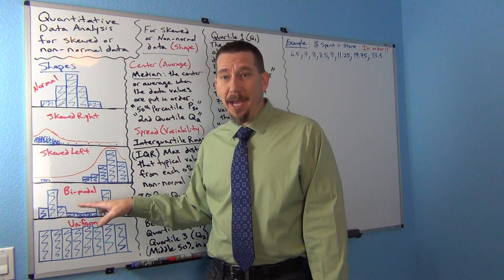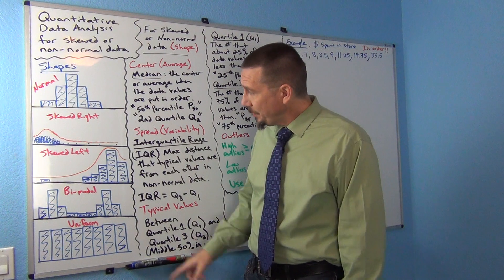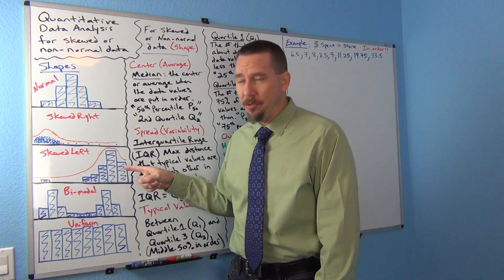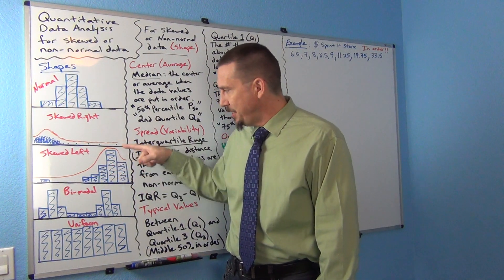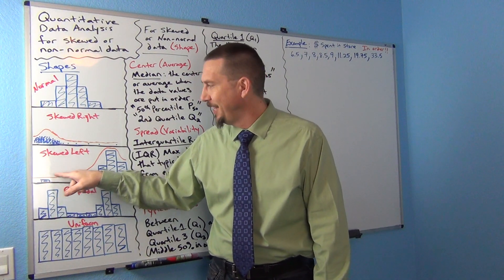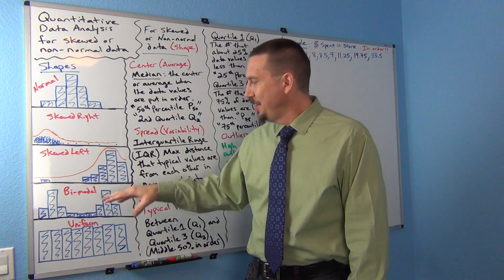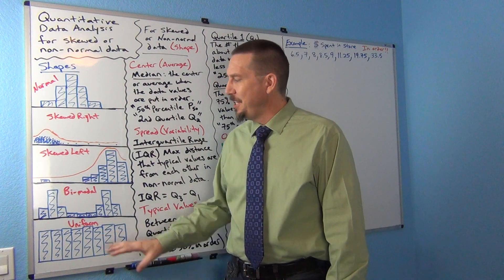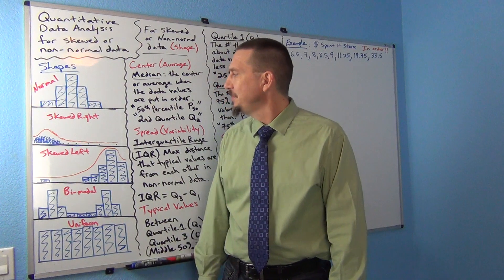I hesitate to show bimodal because I always get students who think everything is bimodal. For example, look at this graph — students tell me it's bimodal, but no, this is not bimodal. This is one mountain and one outlier, one little tiny blip. Bimodal means you've got two real big clusters of numbers. This graph is not bimodal — it's skewed left.